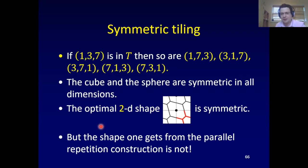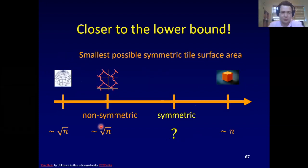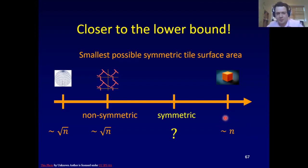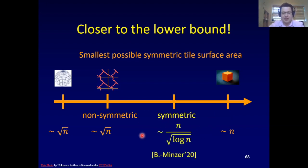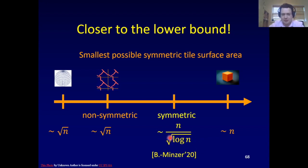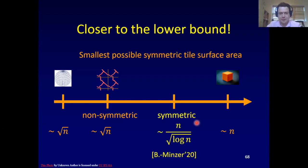The two-dimensional shape from the non-symmetric case actually is symmetric too — it has an axis of symmetry along the x=y line — but in general the shape from the parallel-repetition construction is not symmetric. So that construction doesn't tell us whether there are symmetric spherical tiles. In the non-symmetric case surface area is asymptotically root n. In the symmetric case the answer is much closer to n — essentially n up to a root-log-n factor. There is a huge gap between the symmetric and non-symmetric cases.